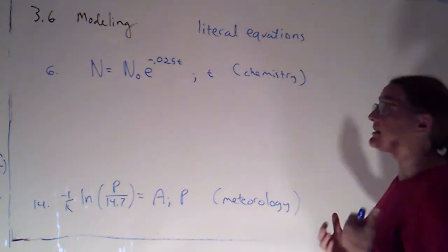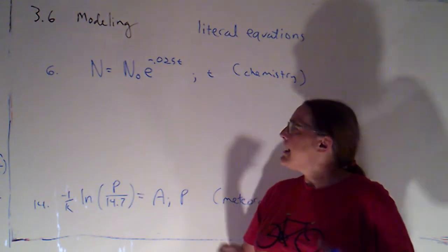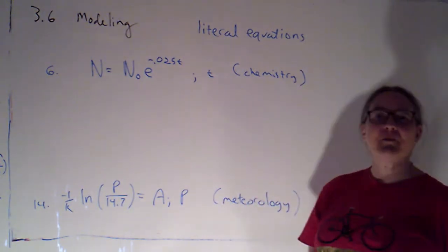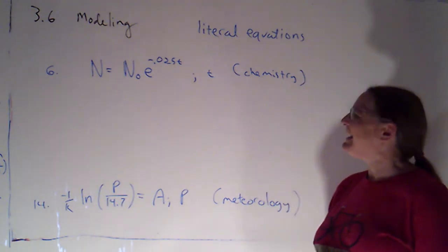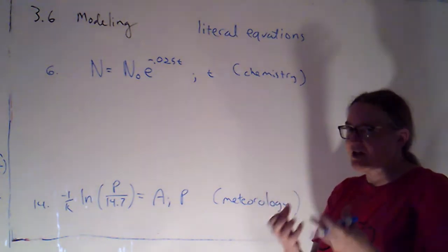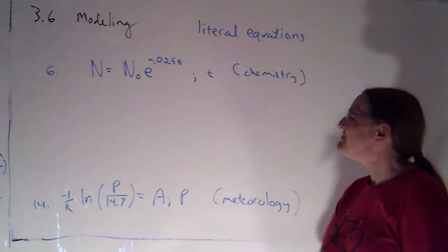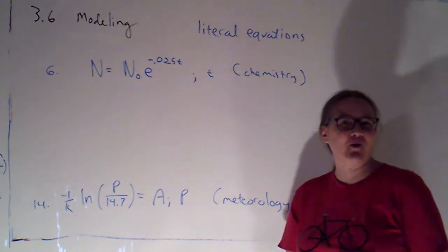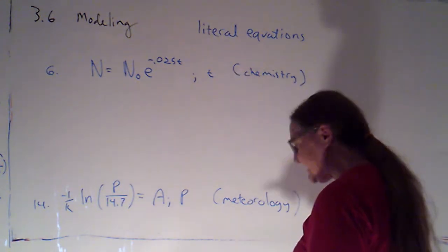So we're basically using the skills that we developed in the last section where we were solving equations, but everything, almost everything, is going to be a letter instead of a number. In some ways, it's easier because we don't have any arithmetic to do. In some ways, it's a little harder just because it's more abstract. So let's try this first one. We're trying to solve for t.